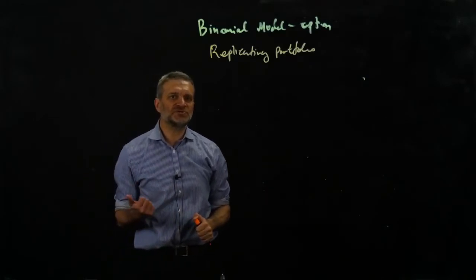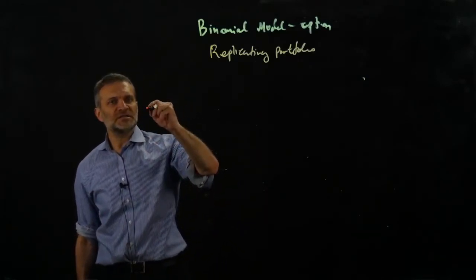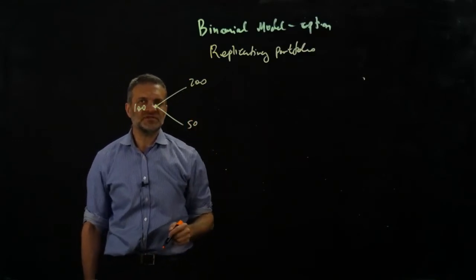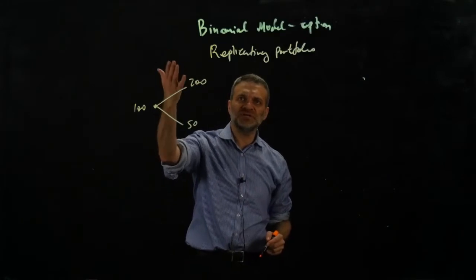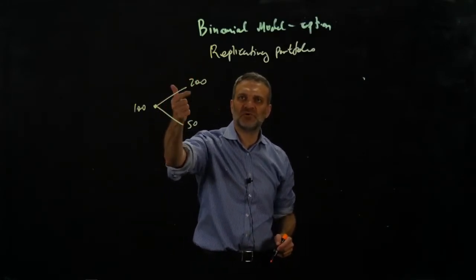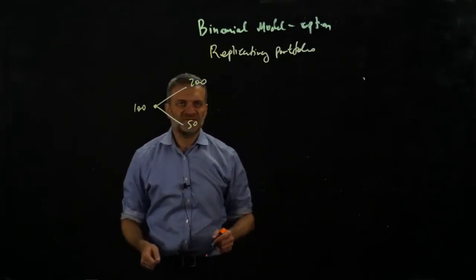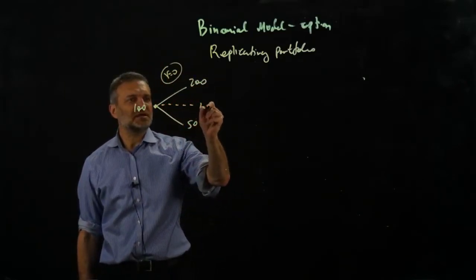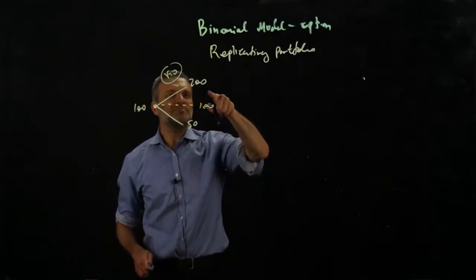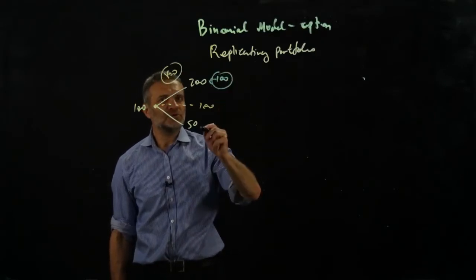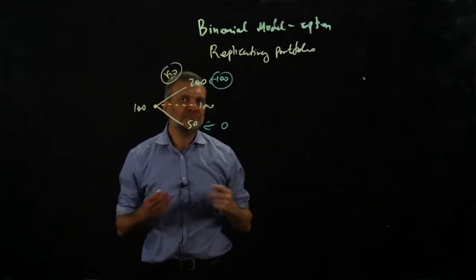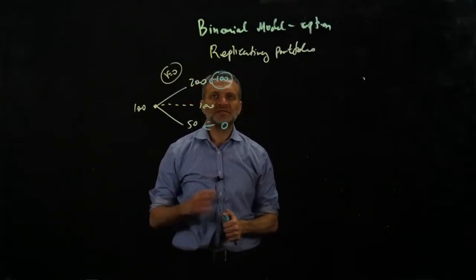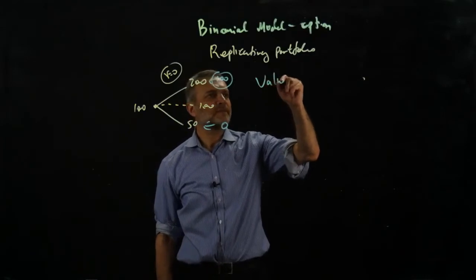What is this replicating portfolio and how do we use it to value options? Let's assume you have a stock with two outcomes: the good outcome is $200 and the bad outcome is $50. At the time the option matures — say in one year — there can be only two outcomes for the stock: $200 or $50. Let's say the interest rate is zero and your strike for the option is exactly $100. When you go up, the call option value will be $100, and when you go down the option value will be zero.